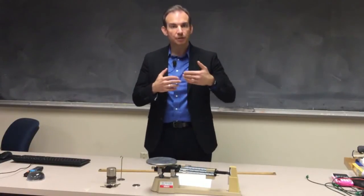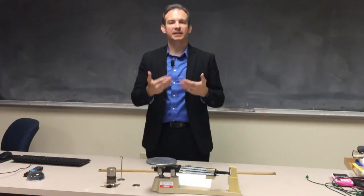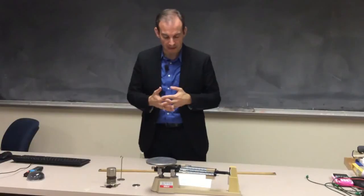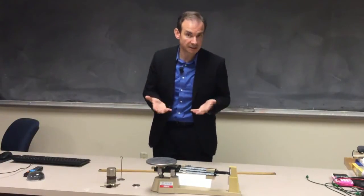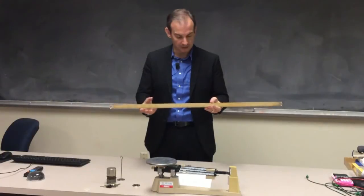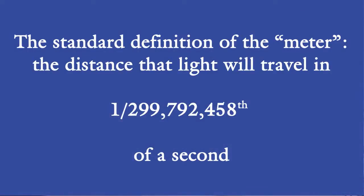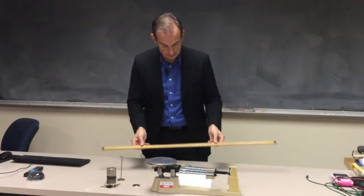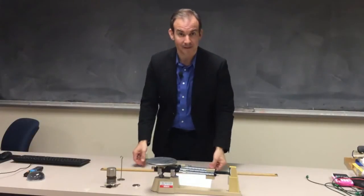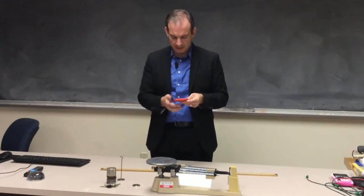Light, regardless of the motion of its source or the detector used to find it, moves at a fixed speed in empty space — the speed of light — and that speed is constant no matter what state of motion the emitter or observer are in. Today, the meter is defined as the distance that light will travel in 1/299,792,458 of one second. That definition, of course, depends on the definition of time, which in the International System of Units is the second.